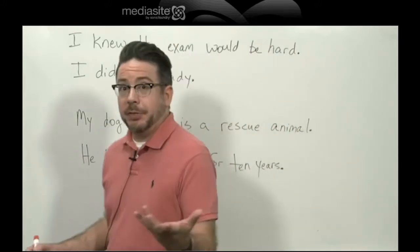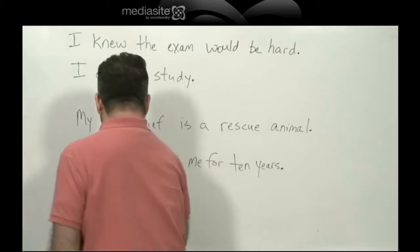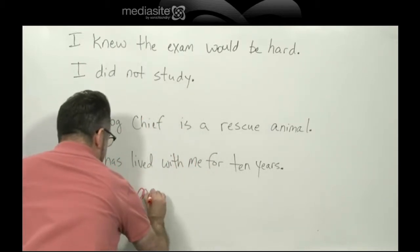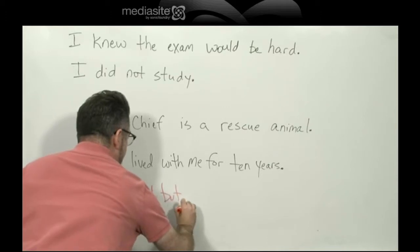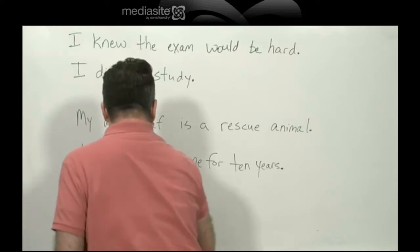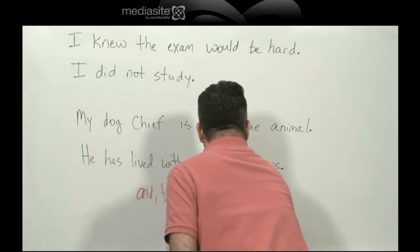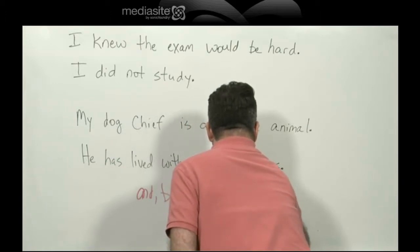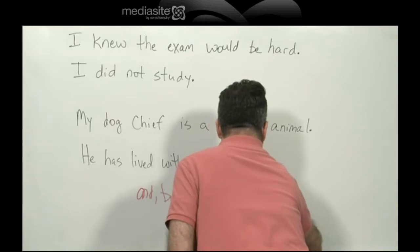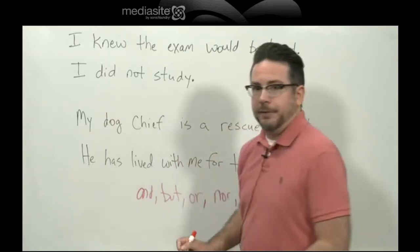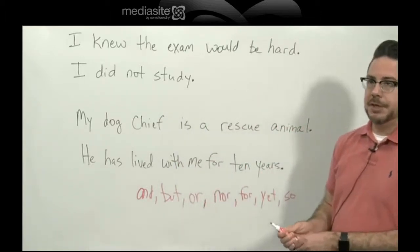The most common three that you're all familiar with: and, but, and or. But we also have nor, for, yet, and so. But the first three are by far the most common.